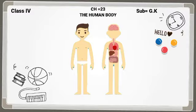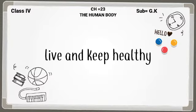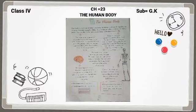Our body is made up of different parts. हमारा जो शरीर होता है बच्चों, वो अलग-अलग हिस्सों से मिलकर बना होता है. All these parts work together to help us live and keep healthy. और जितने भी हमारे शरीर के अंग होते हैं, वो एक साथ काम हमें जीवित रखने के लिए, साथ ही हमें healthy रखने के लिए करते हैं.